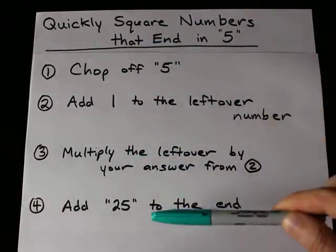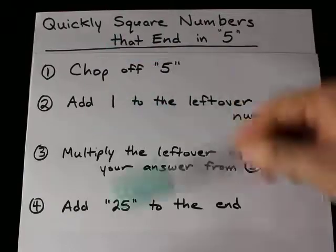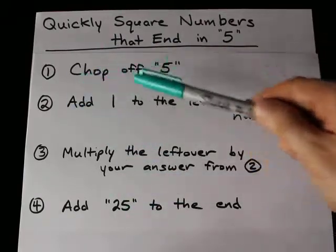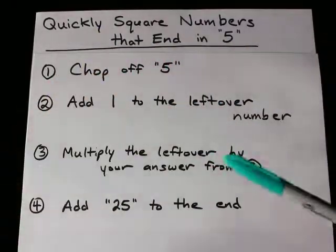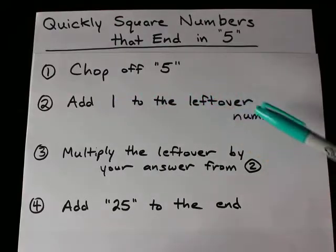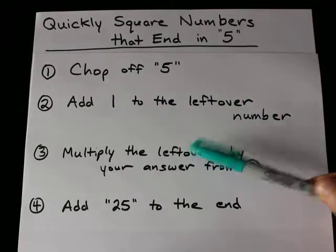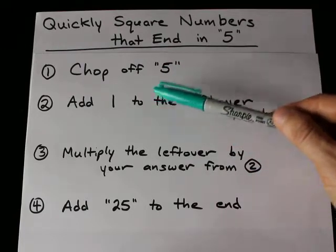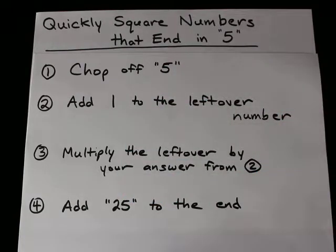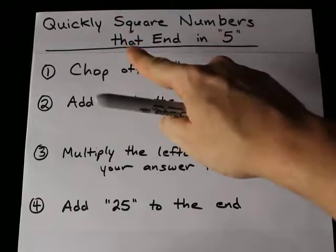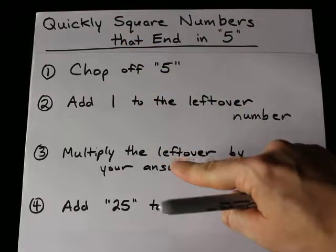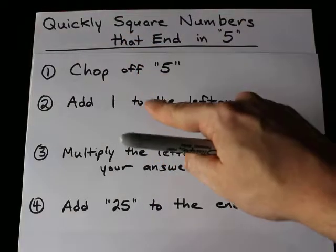It's a quick 4 step process and it's even less than that because I broke it down. All you're going to do is chop off the 5 from the number, add 1 to whatever number you have left over, multiply that leftover answer by whatever you got from up there, and then you're going to add 25 to the end. Chop off the 5 and multiply whatever number is left by 1 more than that number.